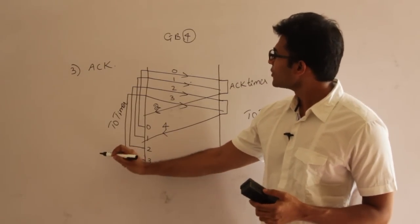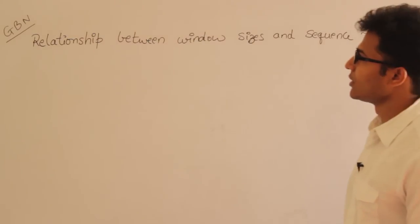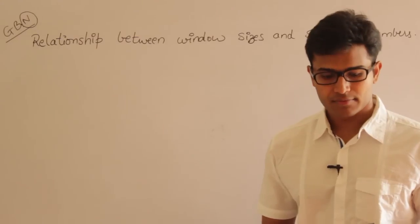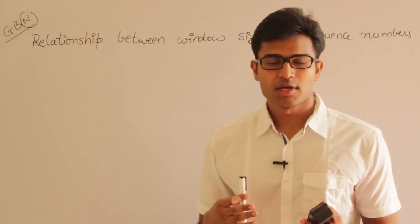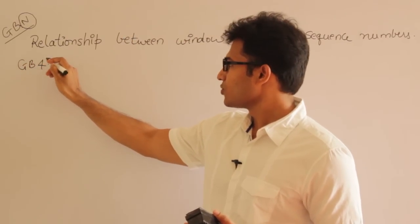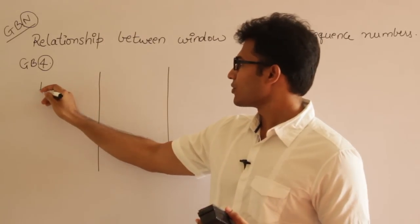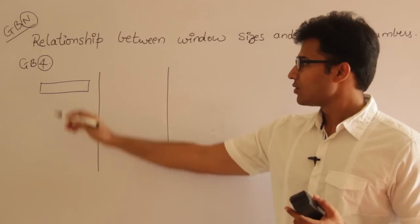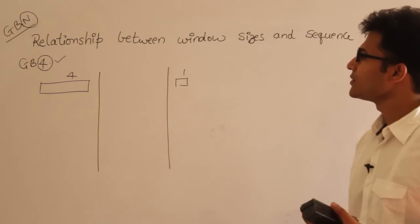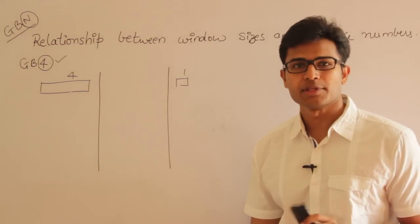Now let's see the relationship between window sizes and sequence numbers in Go Back N. In Go Back N, N is the sender window size and receiver window size is always 1. In any sliding window protocol, the number of sequence numbers required equals the window size. For Go Back 4, sender window size is 4. How many sequence numbers do we need at least? We need at least 4 sequence numbers — otherwise there will be repetition within the same window.